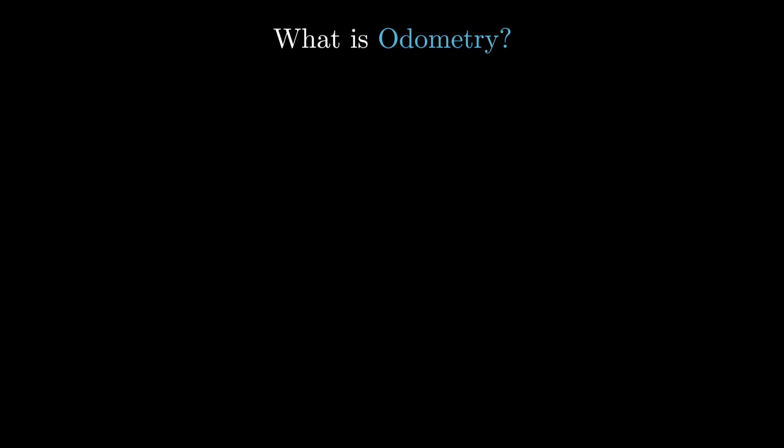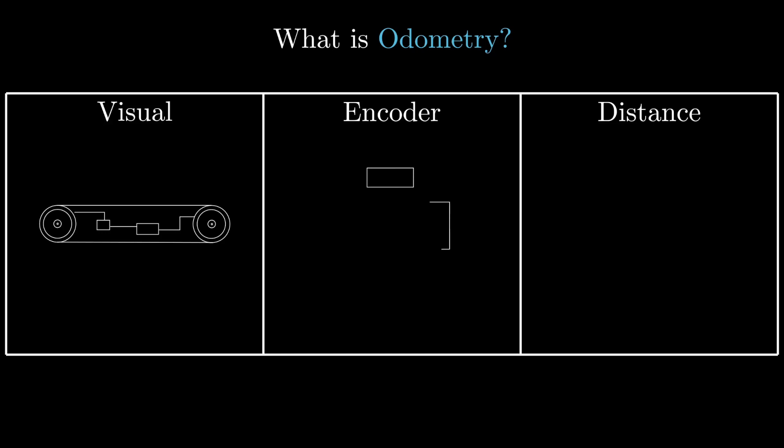Odometry is a form of navigation where a robot or autonomous vehicle is able to detect changes to its own position. What it describes is the general process of using motion sensors of any type to detect displacement from a starting point.